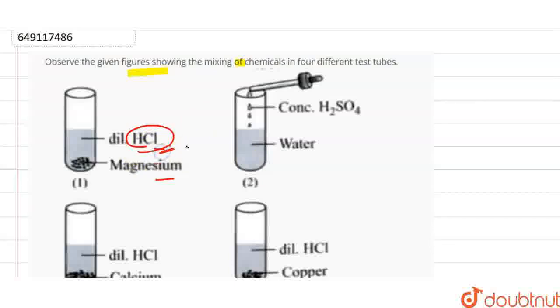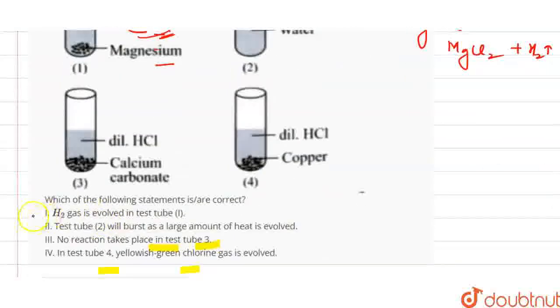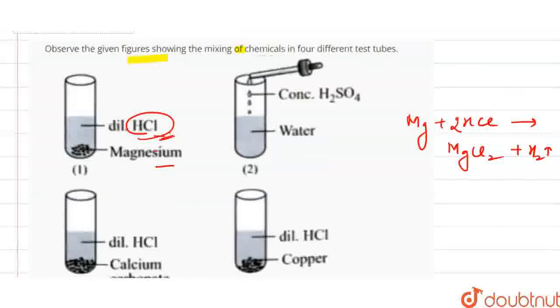HCl is reacting with metal. So when magnesium reacts with HCl, what does this form? MgCl2 and H2 gas evolve. So H2 gas is evolved, and this statement is correct. Let's talk about the next statement.